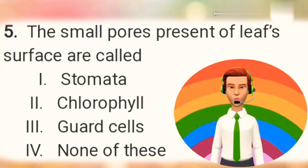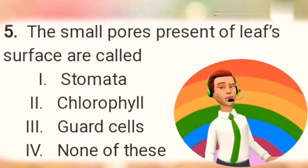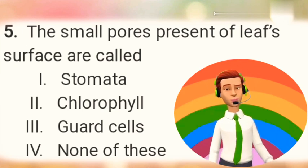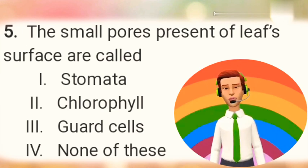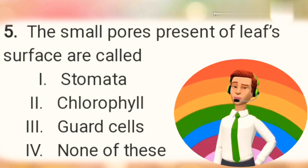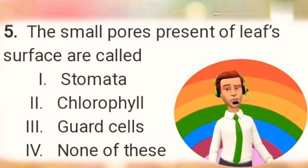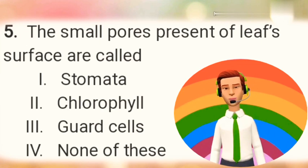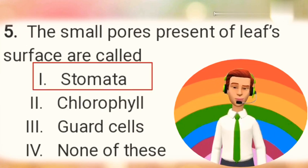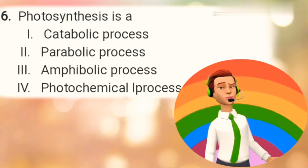Question number 5: The small pores present on leaf's surface are called? Option 1: Stomata. Option 2: Chlorophyll. Option 3: Guard cells. Option 4: None of these. The right answer is Option 1 — Stomata.